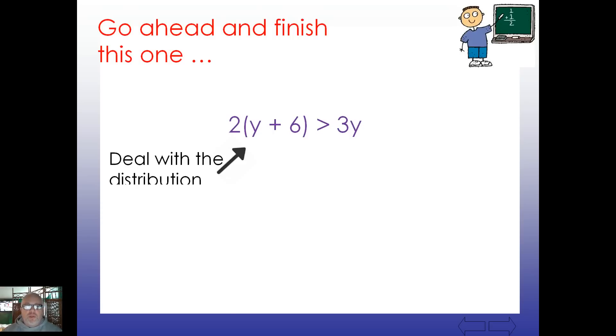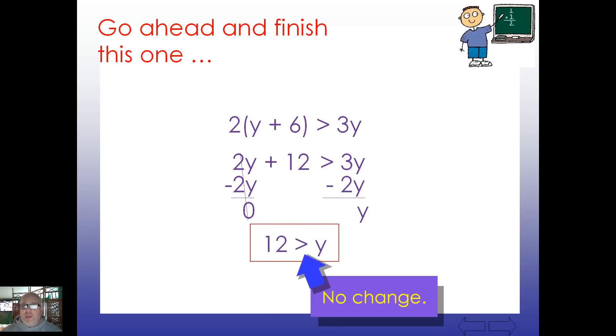All right. Did you distribute that and get 2y plus, hopefully you put down a 12, very good, is greater than 3y? I'm going to get rid of the smaller version of y. And I'm down to a nice simple answer of y is less than 12. Again, no change.